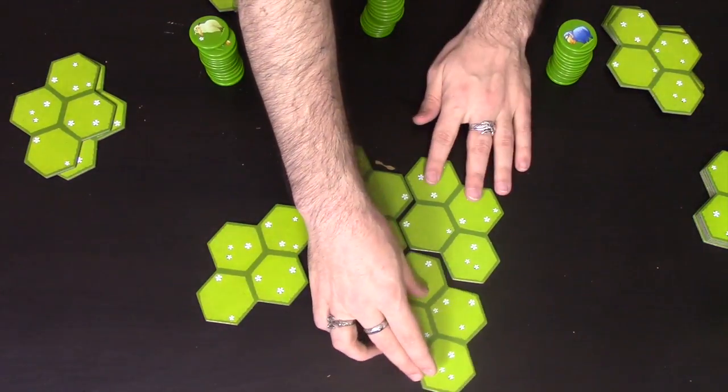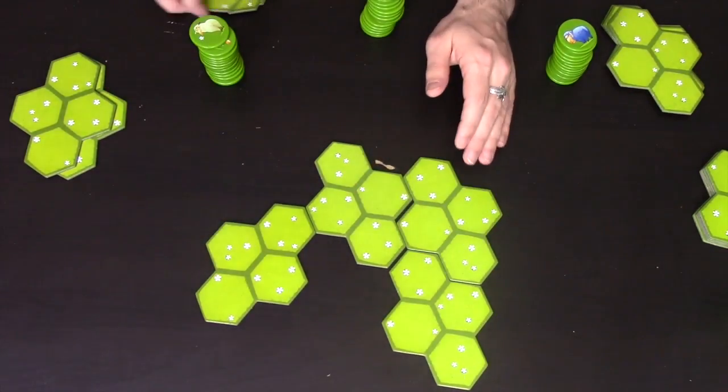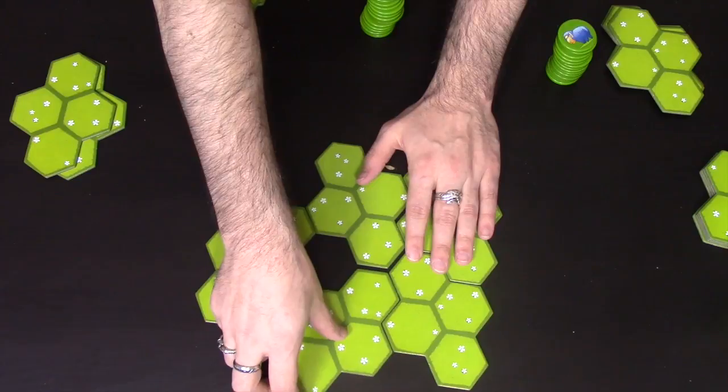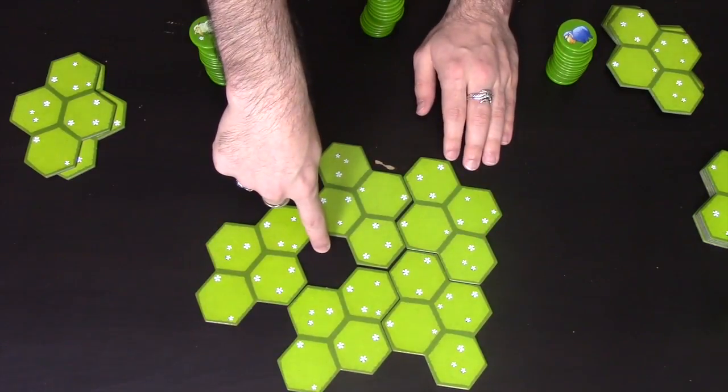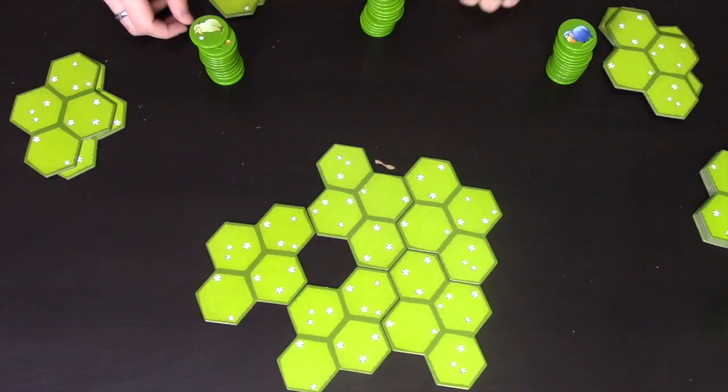And you do that until all the pastures are out on the board. There are allowed to be gaps, so on black's next turn, black could do this, and it would leave a gap in the middle there, and you'd keep doing that until all, in this case, 12 pastures are out.